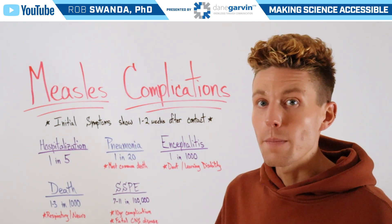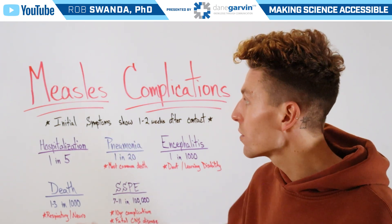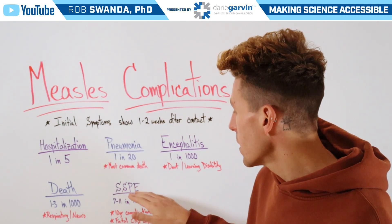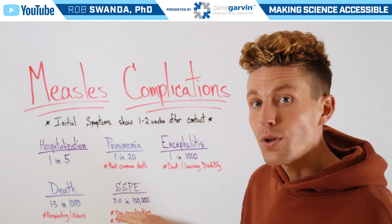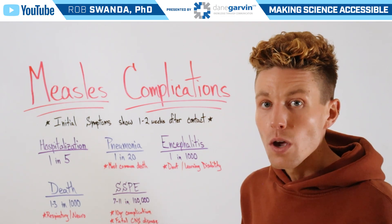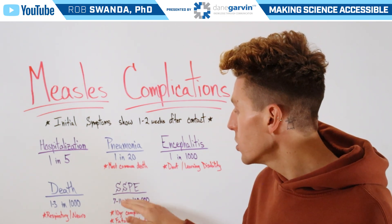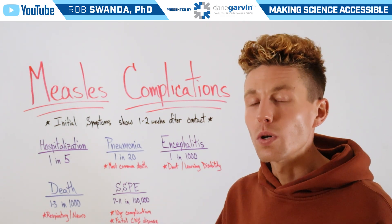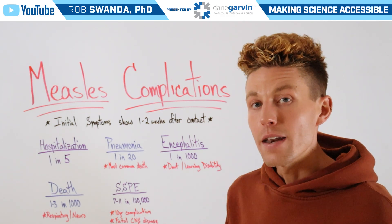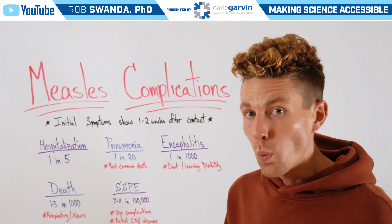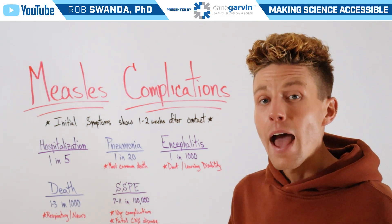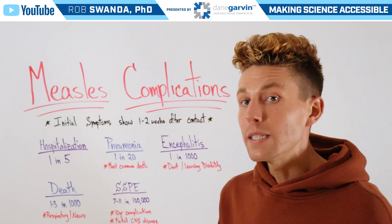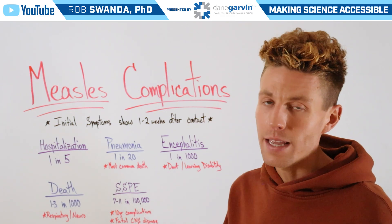If we fast forward about 7 to 10 years after a measles infection, somebody may experience subacute sclerosing panencephalitis, also known as SSPE, which occurs in about 7 to 11 individuals out of every 100,000. But if we look at those who are just under the age of 5, that number actually rises to about 20 individuals in every 100,000. This is a fatal central nervous system disease, and we're going to deep dive into that condition in my next video.